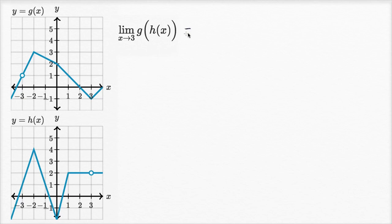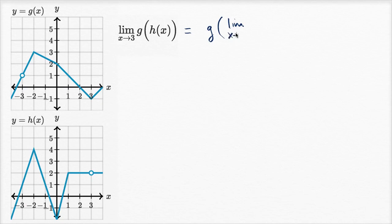We can leverage our limit properties. We know that this is going to be the same thing as g of the limit as x approaches three of h of x. So we just need to figure out what the limit of h of x is as x approaches three.